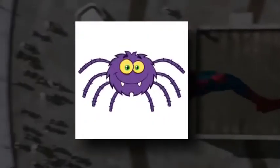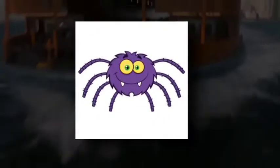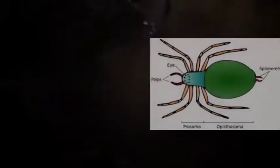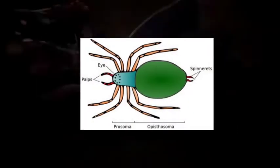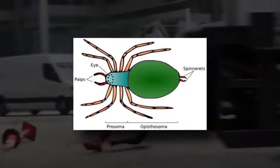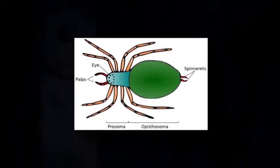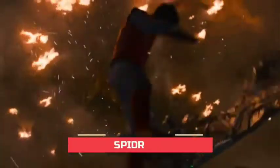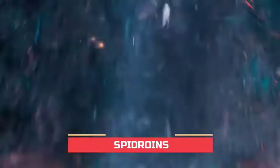Friends, there are 45,000 different species of spiders. They produce different webs. Spiders have spinnerets. That's why they produce webs. That's why they have a protein.